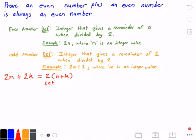So let's let n plus k equal some arbitrary integer value. We'll call it m in this case. So now if we rewrite our equation we get 2m.